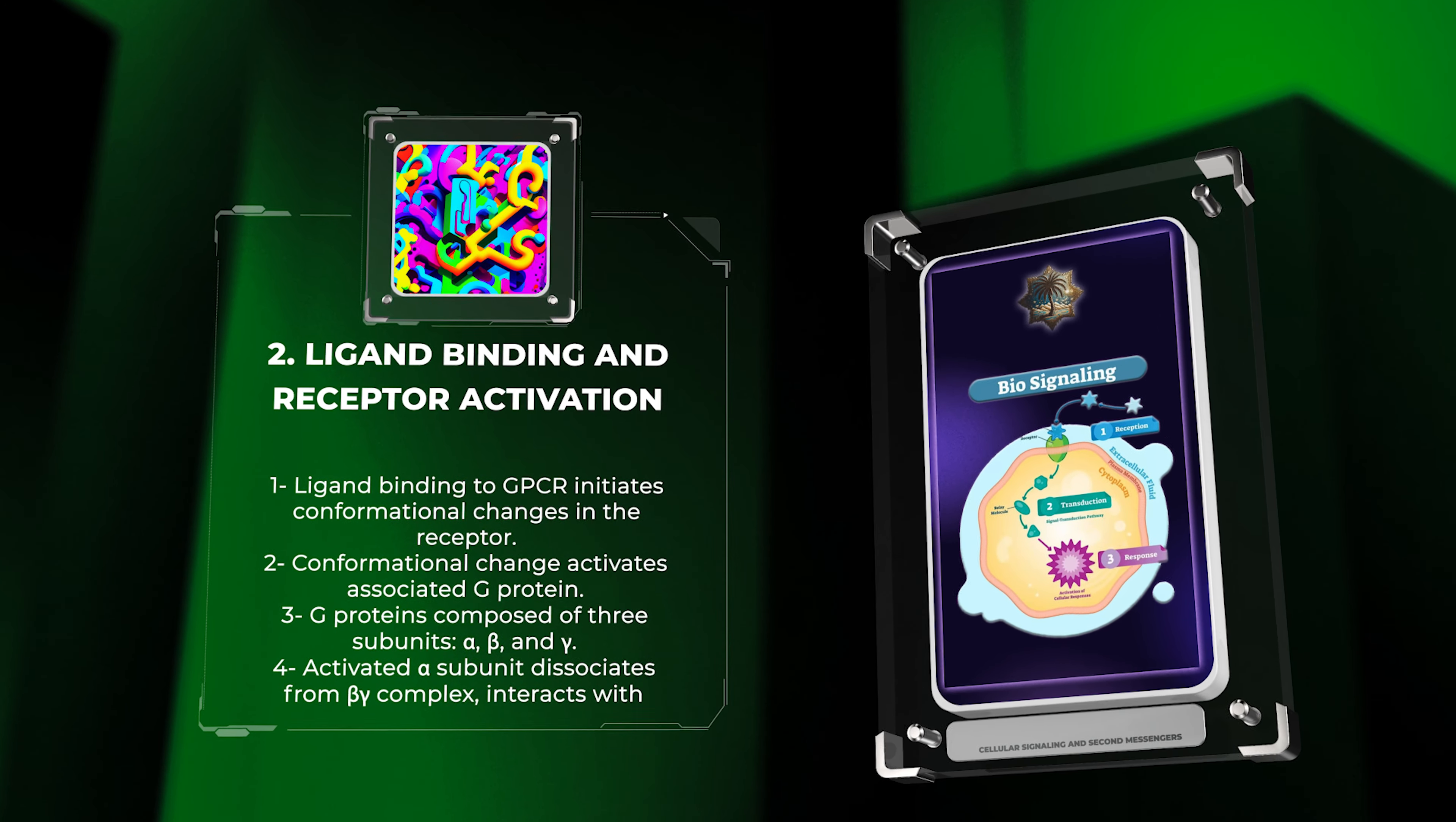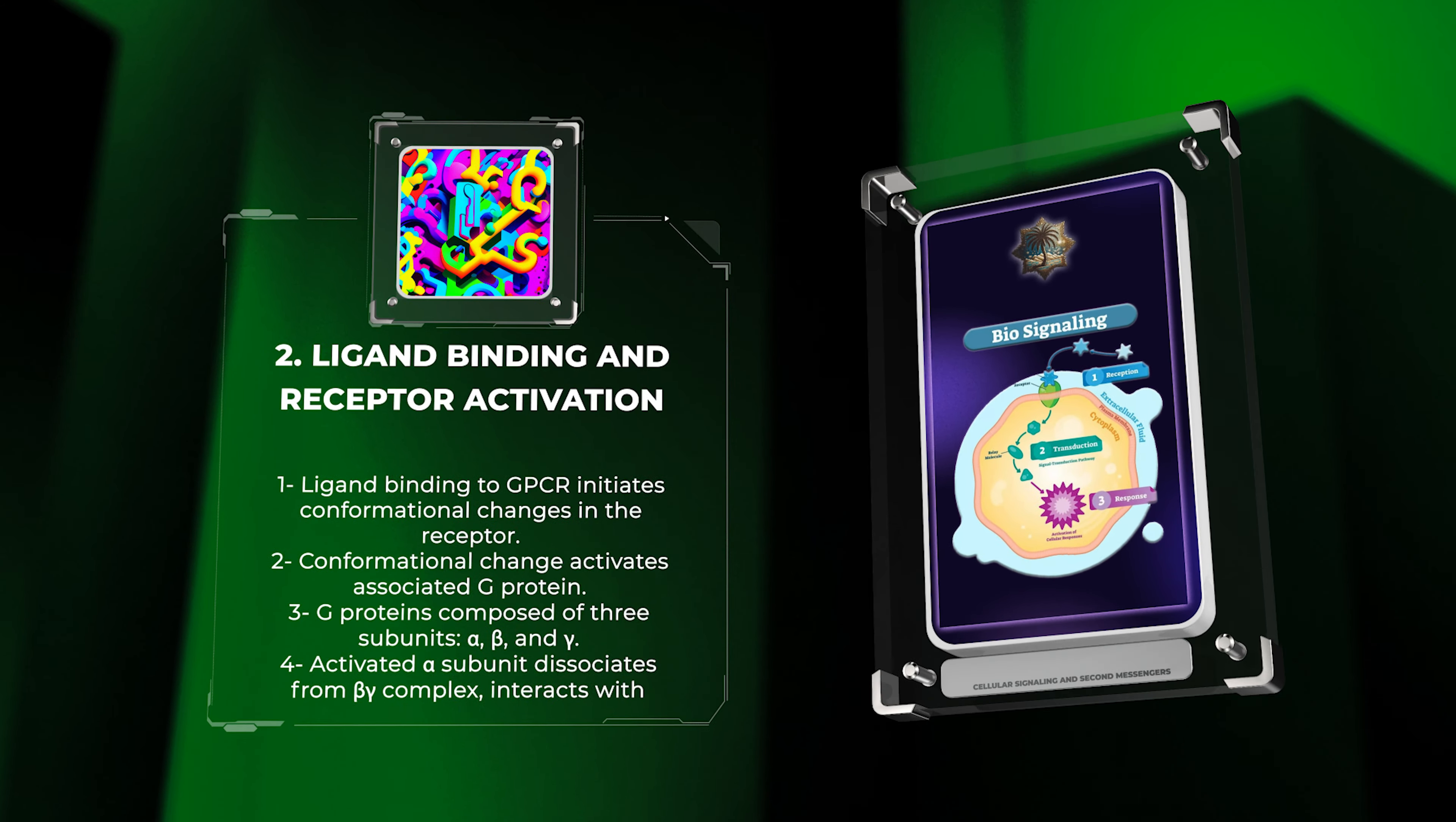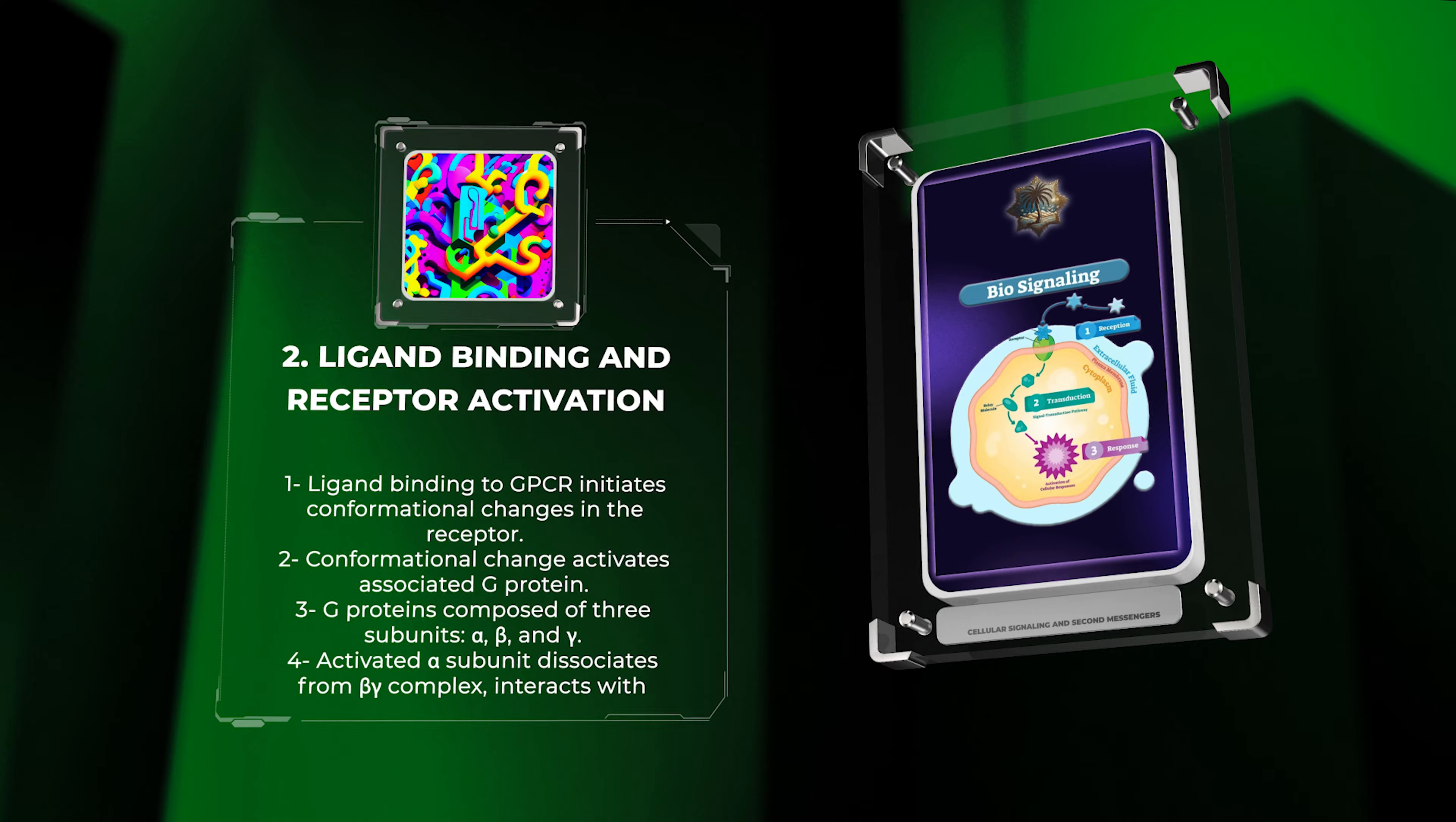When activated, the alpha subunit dissociates from the beta-gamma complex and interacts with effector molecules, such as adenylyl cyclase or phospholipase C. This interaction triggers the production of second messengers, which relay the signal to downstream components of the signaling pathway.